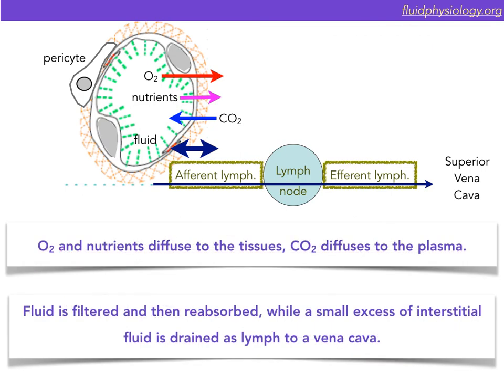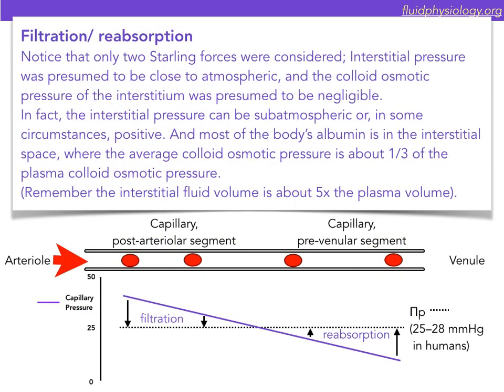Oxygen and nutrients diffuse to the tissues, while carbon dioxide diffuses from the tissues back to the plasma. Fluid is filtered and then reabsorbed, while a small excess of interstitial fluid is drained as lymph to one of the great veins. You were taught about the Starling forces and how, along the length of just a single capillary, fluid was initially filtered from plasma to the tissues and then reabsorbed from the tissues back into the plasma. Notice that only two Starling forces were considered.